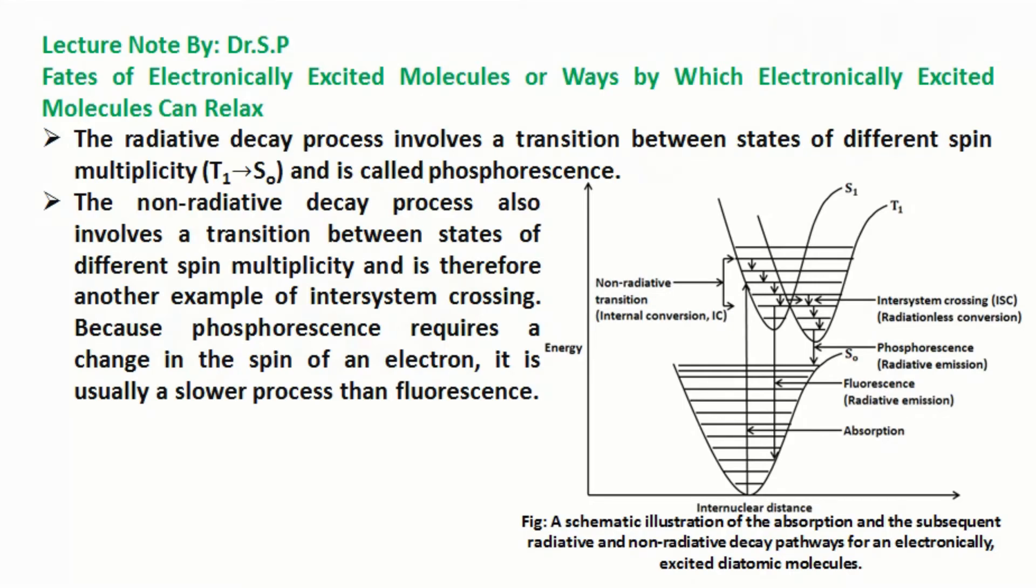Because phosphorescence requires a change in the spin of an electron, it is usually a slower process than fluorescence.